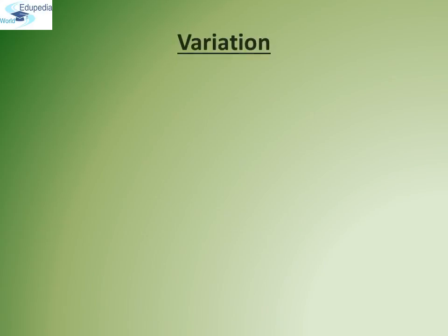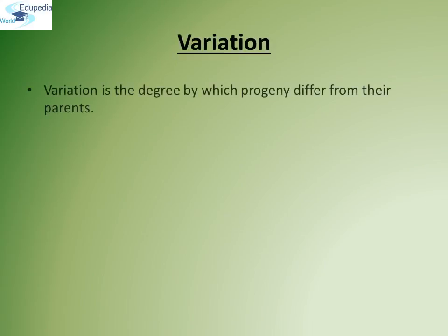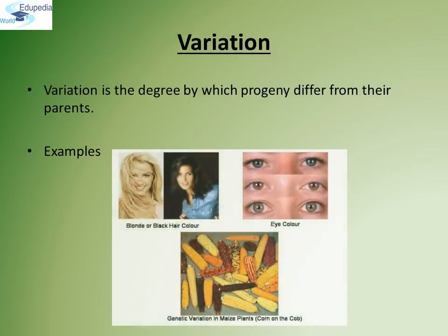What is variation? Variation is the degree by which progeny differ from their parents. For example, hair color and eye color seen in humans. Parents may have blonde hair while the progeny may have black hair color. Similarly with eye colors. Genetic variation is not only seen in animals but also seen in plants — for example, genetic variation in maize plants.